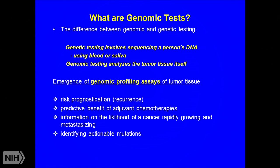To clarify the difference: genetic testing involves sequencing a person's DNA using blood or saliva. Genomic testing analyzes the actual tumor tissue itself. With genomic profiling assays, physicians can perform risk prognostication, predict the benefit of adjuvant chemotherapies, assess the likelihood of rapid tumor growth and metastasis, and identify actionable mutations.